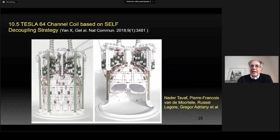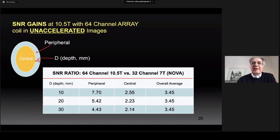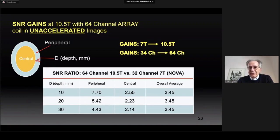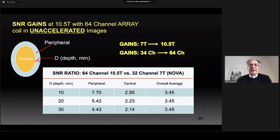Within this project we have gotten 10.5 tesla working, and this is our most recent 10.5 tesla human head coil, which has 64 channels. Here is an SNR comparison at 10.5 tesla with our 64-channel coil versus 7 tesla with the commercial 32-channel RF coil — the one used for all the experiments presented so far. Note that in this comparison we have gains due to the magnetic field going from 7T to 10.5T as well as gains from the channel count increase from 32 to 64 channels.